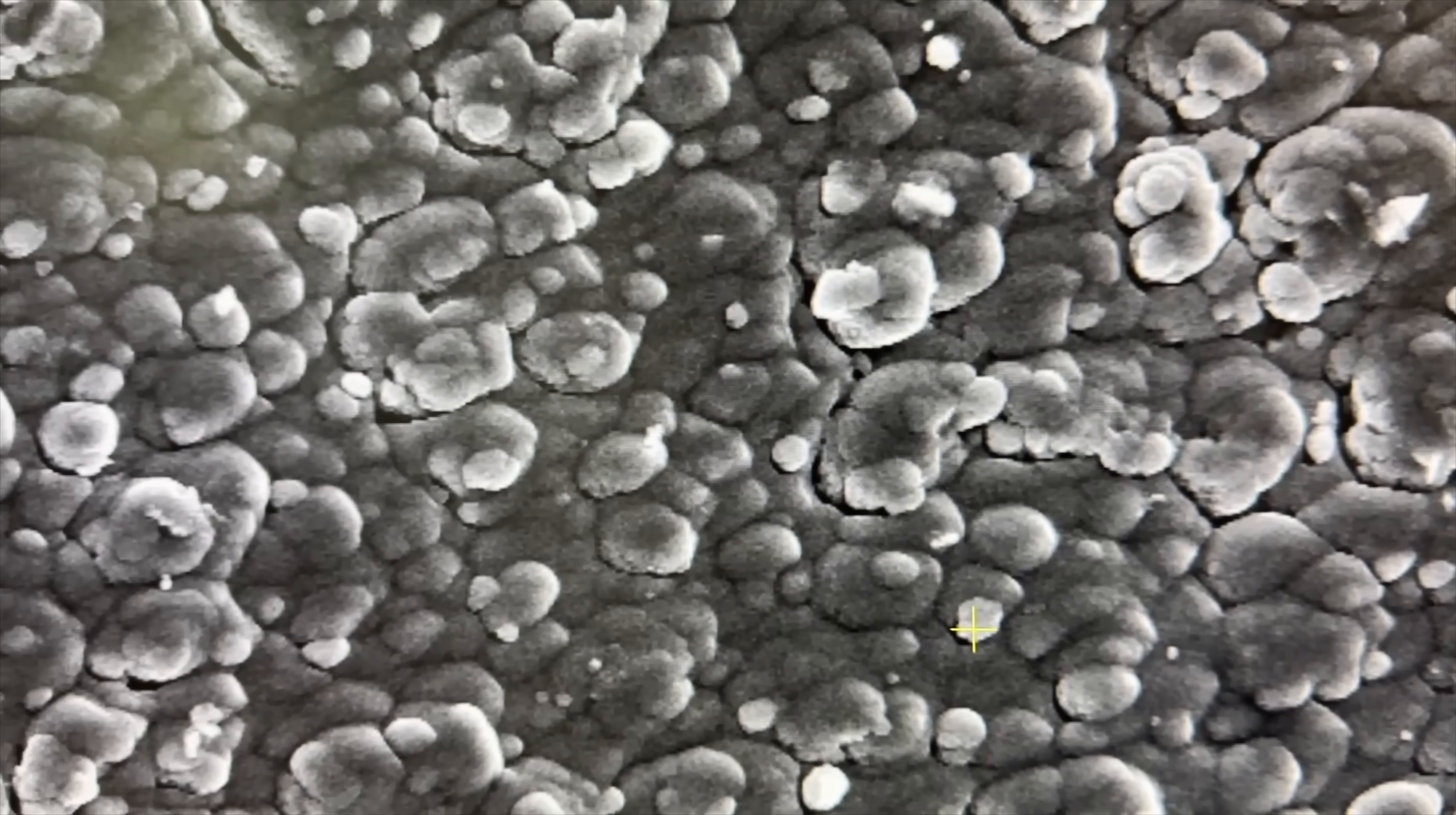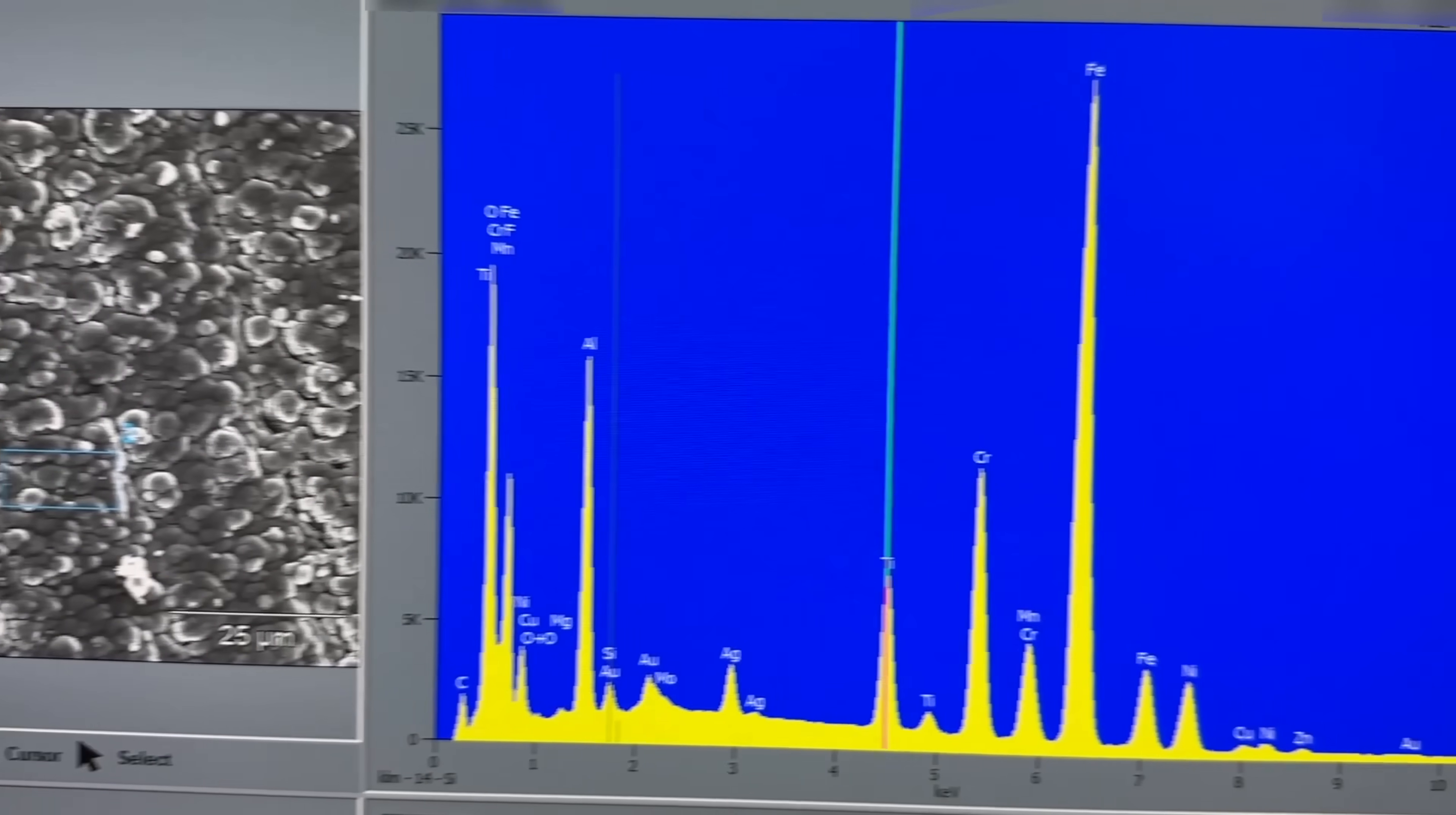This EDS machine is then closed and takes just a few minutes to investigate the sample very close up. Seriously, look how close we are. And when done, it spits out a graph that shows all of the elements in the sample.